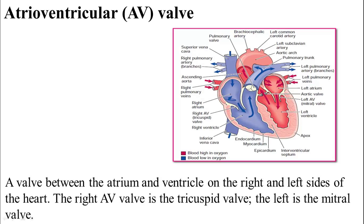The atrioventricular valve is located between the atrium and the ventricle on the right or left side of the heart. The right atrioventricular valve is the tricuspid valve because it consists of three leaflets — leaflets being small leaf-like flaps. The left atrioventricular valve is the mitral valve, or bicuspid valve.